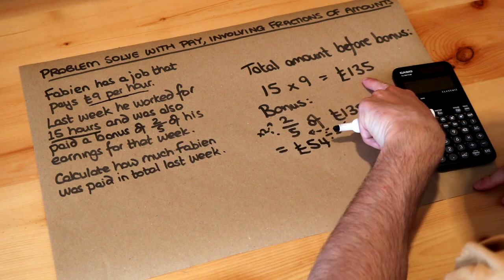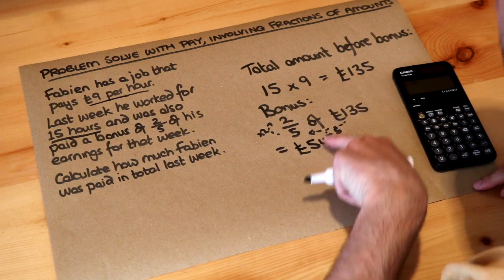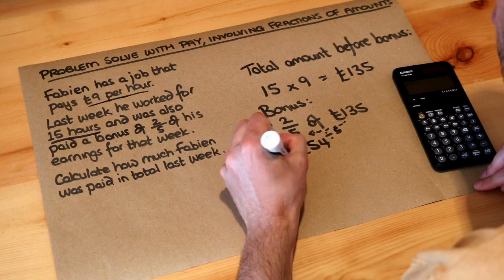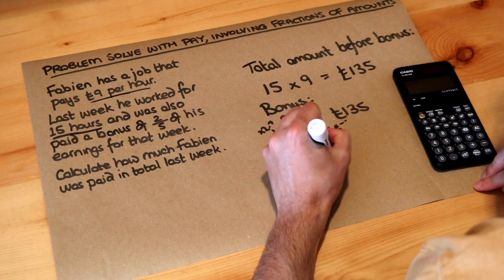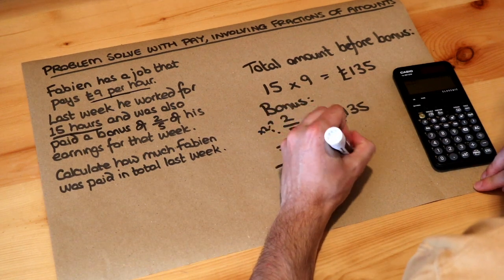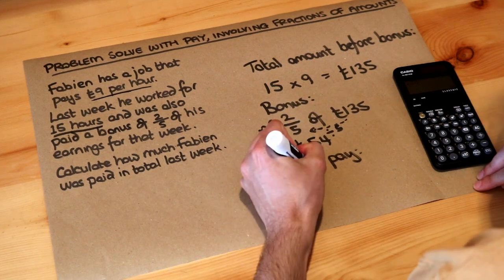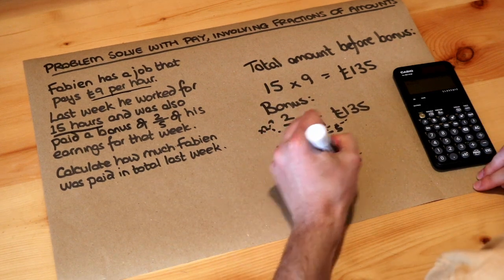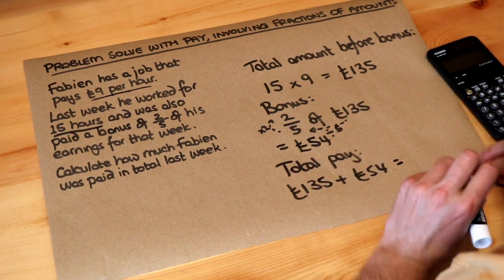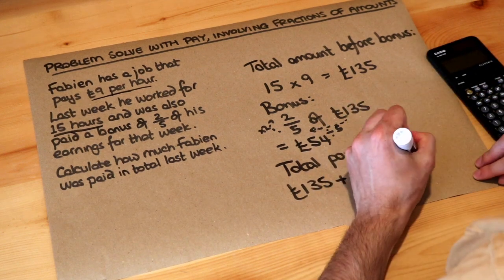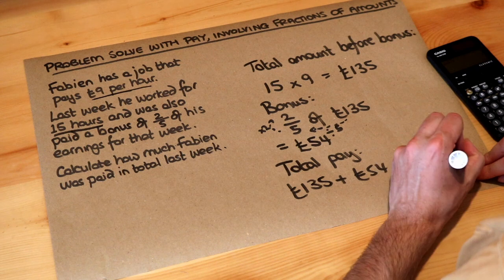So he received £135 plus a bonus of £54. The total pay was just £135 plus £54, and that gives you £189. So that was his final pay.